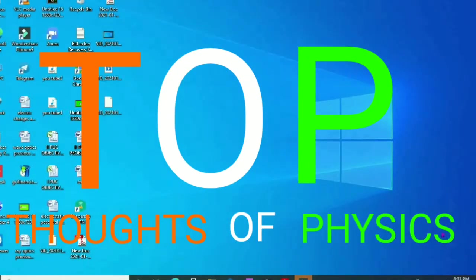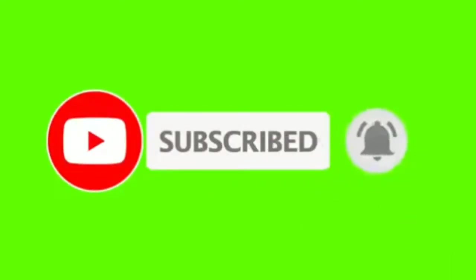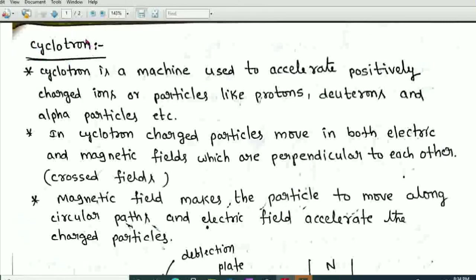Welcome to 'Thoughts of Physics.' In this video on moving charges and magnetism, I will explain the cyclotron — its construction and working. A cyclotron is a machine used to accelerate positively charged ions or particles like protons, deuterons, and alpha particles to higher energies. These accelerated particles are used to bombard nuclei to study nuclear structure.